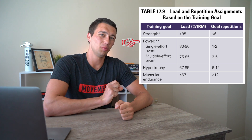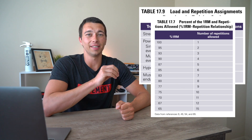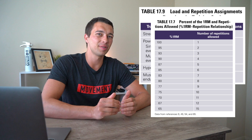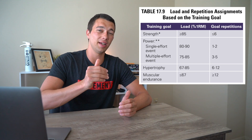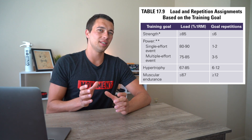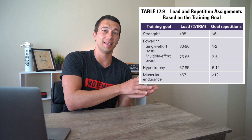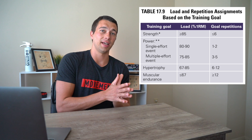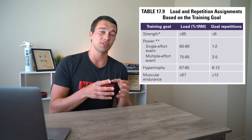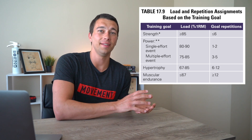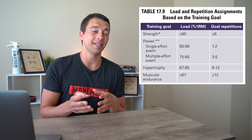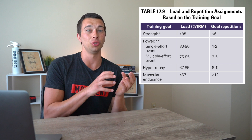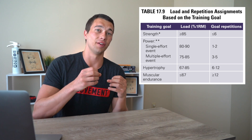Moving on to power, this one's a little more complicated. At 80% one rep max an athlete could do eight reps, but the first four would be fairly fast and the next four would be slow grinding reps. So if we're training for power, we're really just going to do those fast early four reps. There's a rule of thumb for power: you only do about half as many reps as you can, because those first reps are the fastest and most powerful.